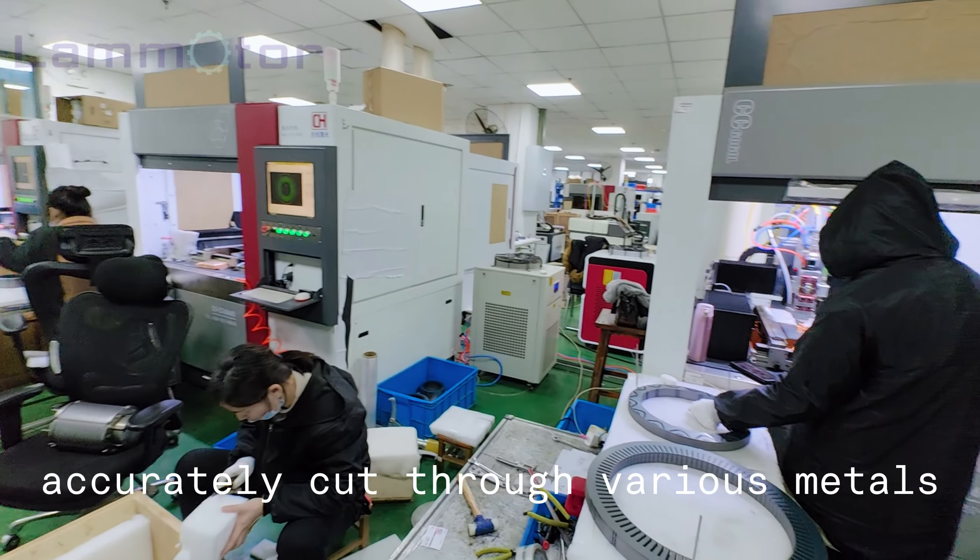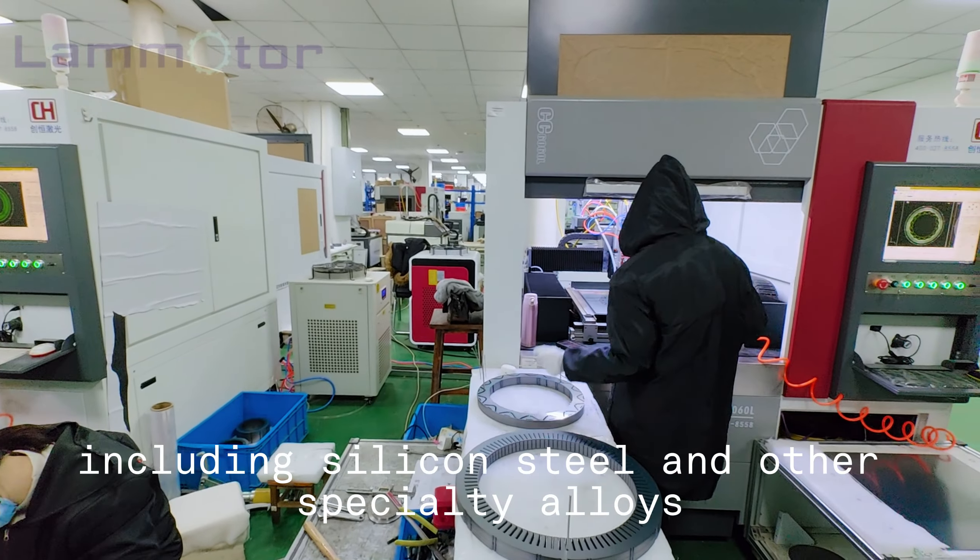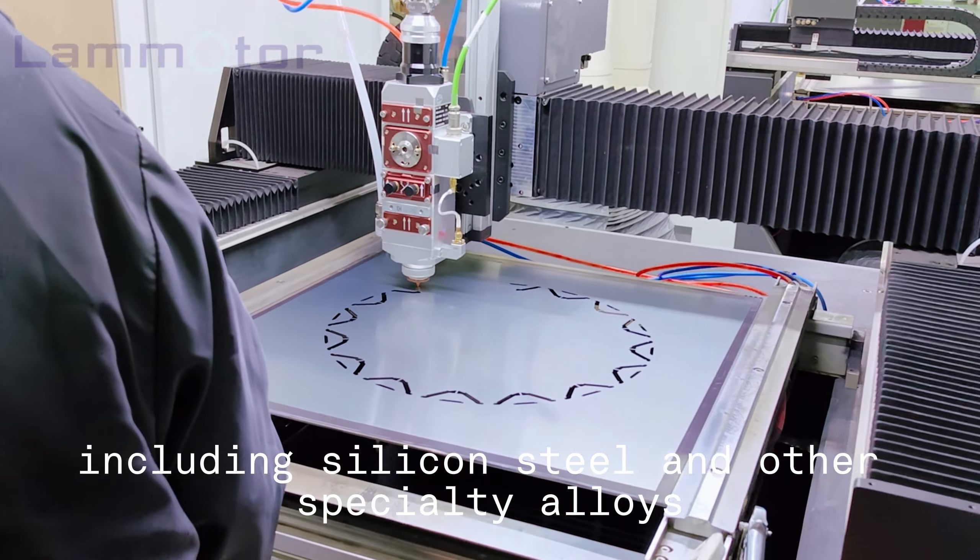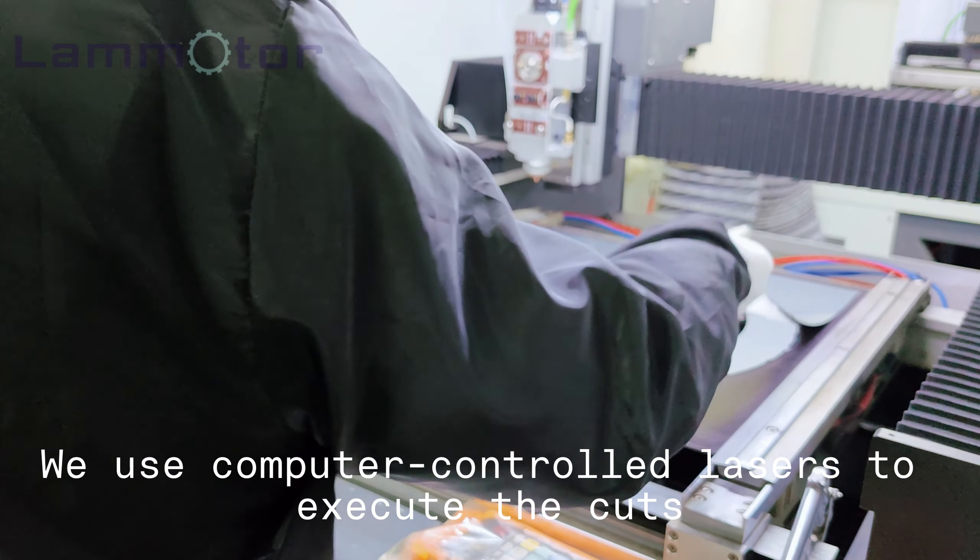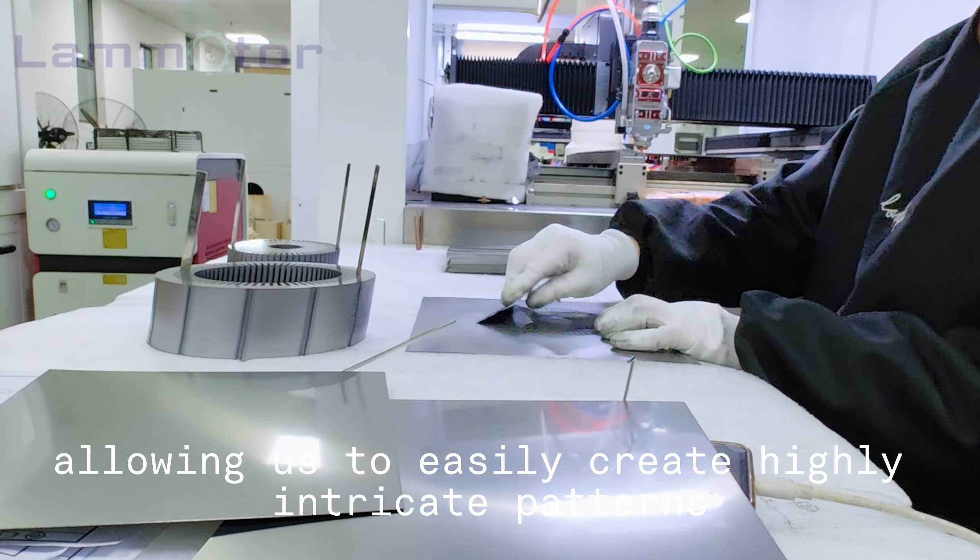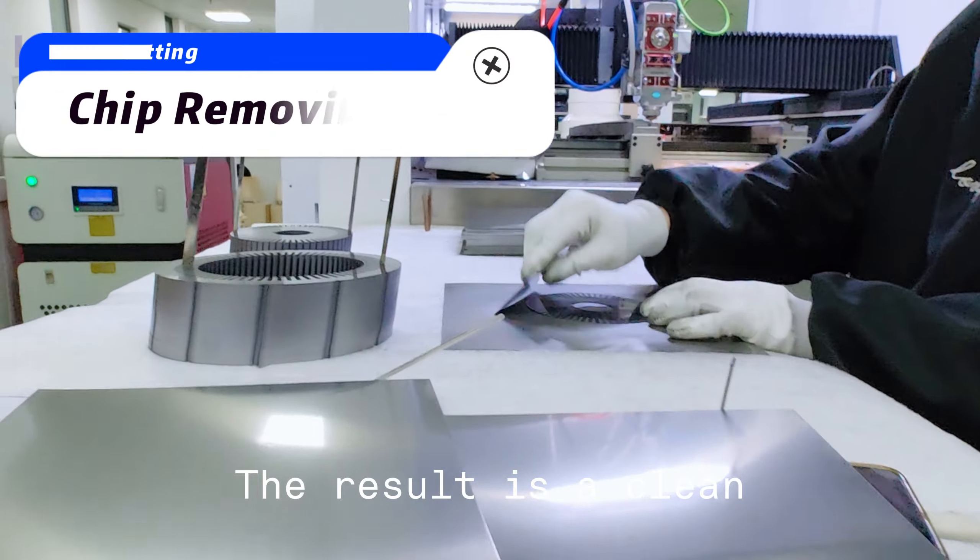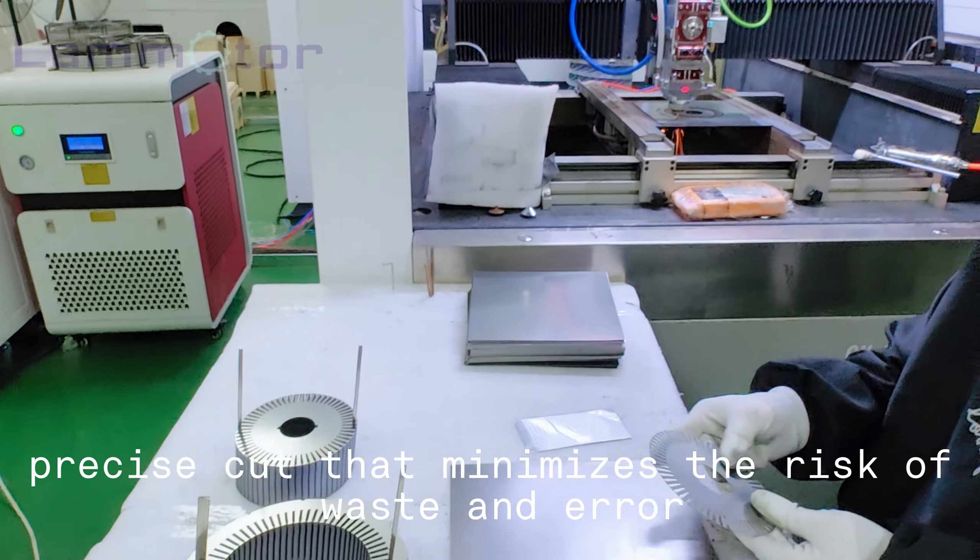Our laser cutting process allows us to accurately cut through various metals, including silicon steel and other specialty alloys. We use computer controlled lasers to execute the cuts, allowing us to easily create highly intricate patterns. The result is a clean precise cut that minimizes the risk of waste and error.